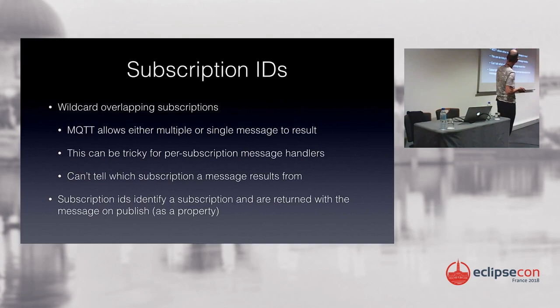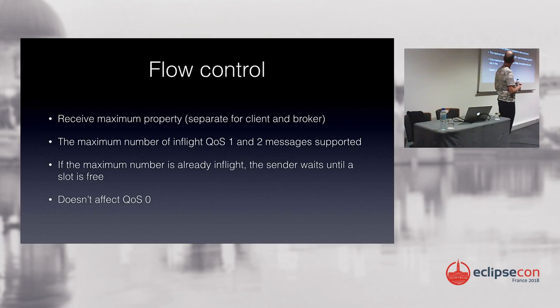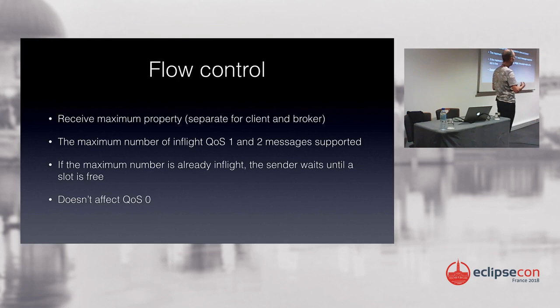This results in much cleaner exchanges between clients and servers. Subscription IDs are useful when you have wildcard subscriptions and messages come back matching multiple subscriptions — previously you couldn't tell which subscription matched which message; subscription IDs fix that. And flow control: the receive maximum advertises the maximum number of simultaneous QoS 1 and 2 messages, allowing you to pause the flow and ensure the receiver isn't overloaded.